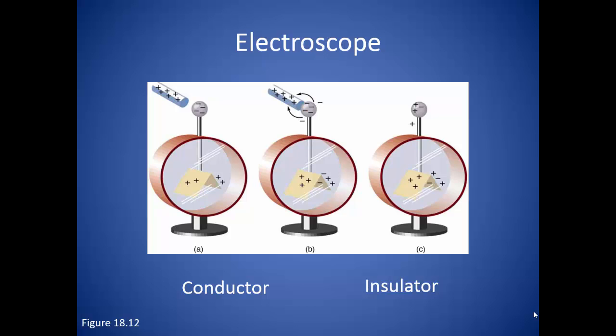If we bring a positively charged rod near the top of the electroscope, the negative charges inside the metal are attracted to it. This leaves the positive charges alone at the other end. The two foil pieces are now both positively charged, and so they repel each other. This separation of charges within a neutral object is referred to as induced polarization.